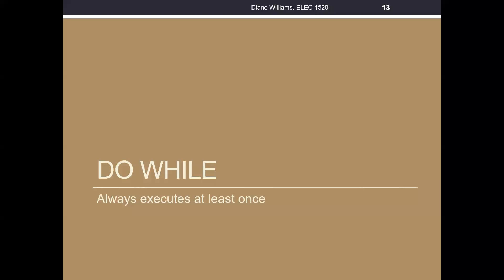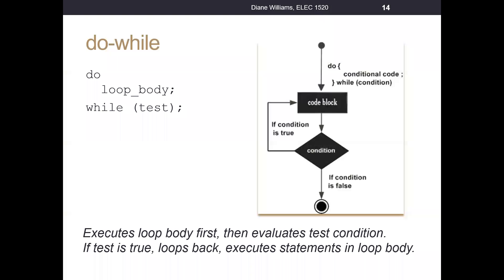Here we are in part two of our series on loops, and we'll talk about the do-while loop. The do-while loop is different from the while loop. The while loop performs a test and then executes the code within the body of the loop when the test is true — while executes the test condition first. The do-while loop is the opposite: it executes the code within the body of the loop and then evaluates the test condition.